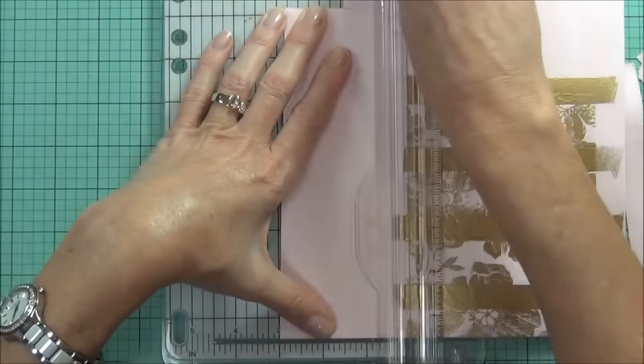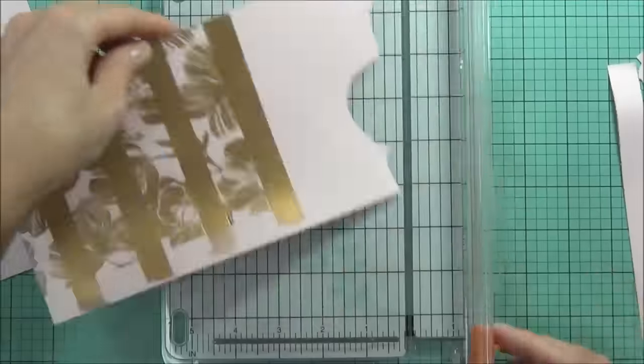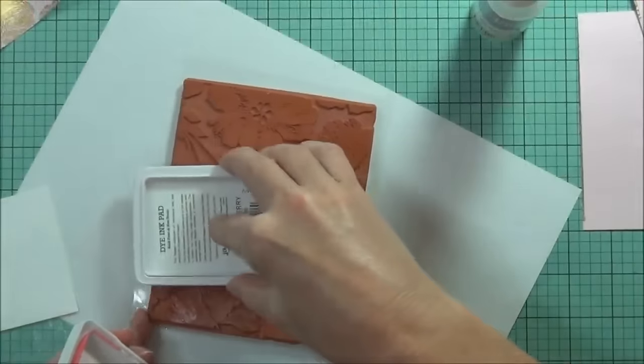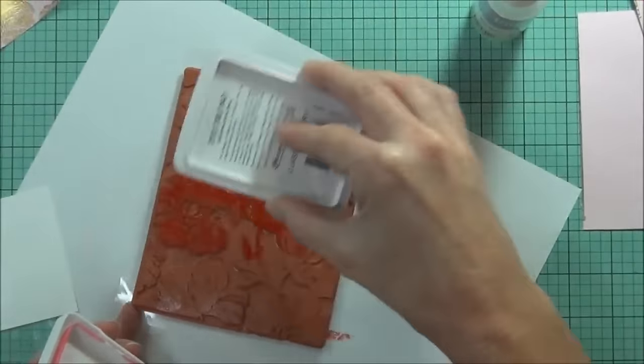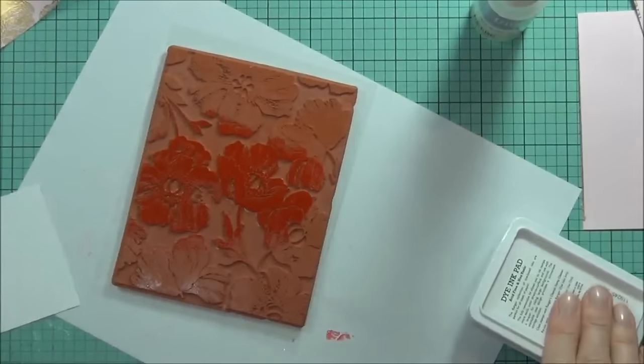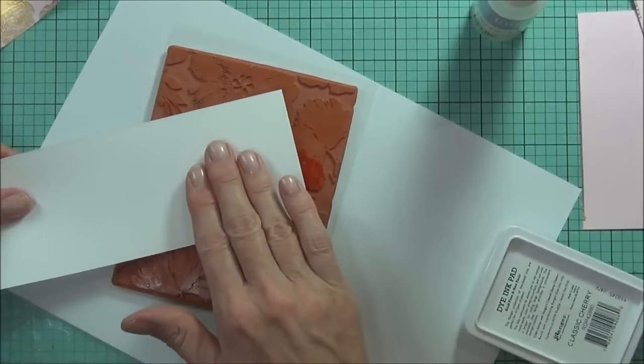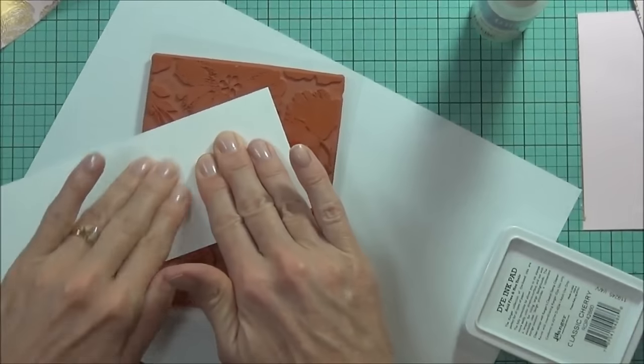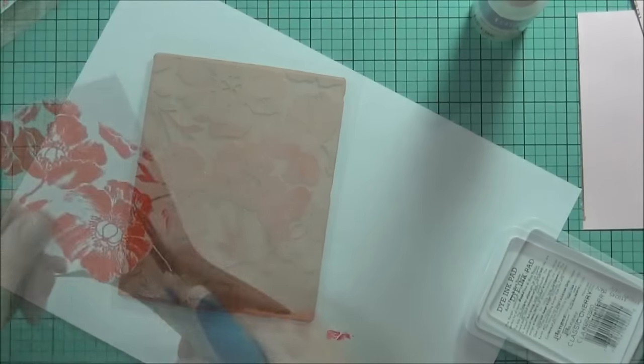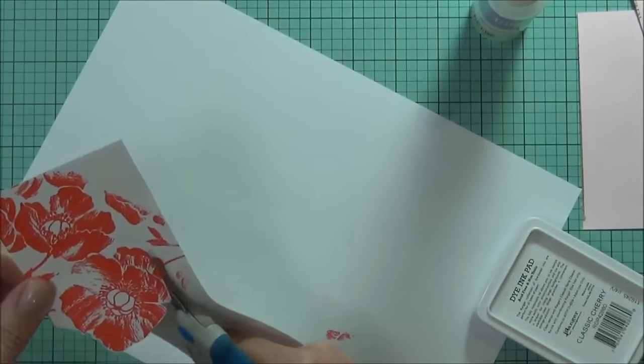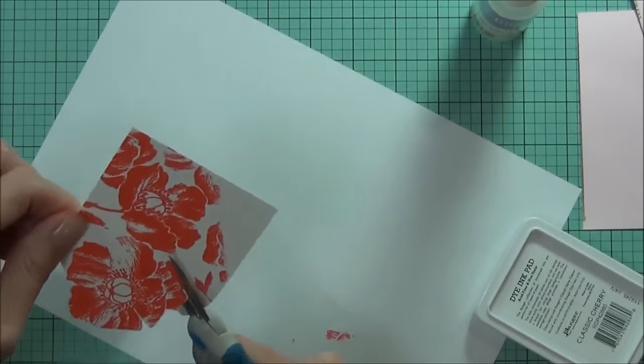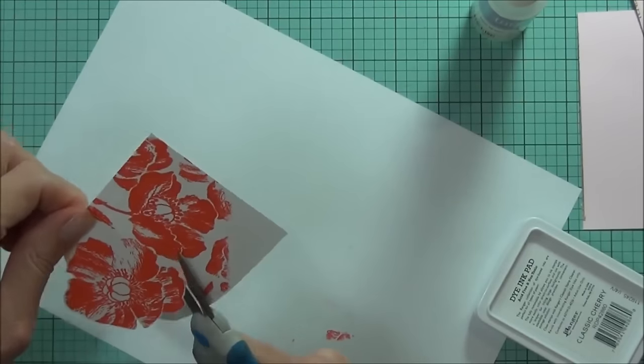I've got some Ranger, this is the Classic Cherry, it's a really pretty red. I'm going to do the same thing. I've just left my stamp on the work surface and then adding my white cardstock straight over top. Then I can cut my flowers out. I'm not being really particular with these flowers. I am leaving a small border around them but I don't want them to look perfect.